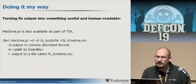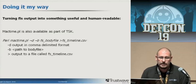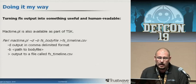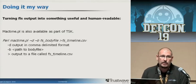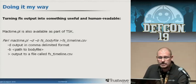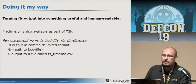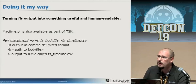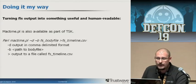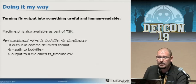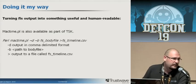Turning FLS output into something human-readable is done with the Mac time Perl script, also available as part of the Sleuth Kit. The sample command is: perl mactime.pl -d -b [body file], output to a CSV file. The -d flag outputs in comma-delimited format, so it's easy to use with Excel, OpenOffice, or the command line. The -b just designates your path to the body file, and you output it to a timeline CSV.